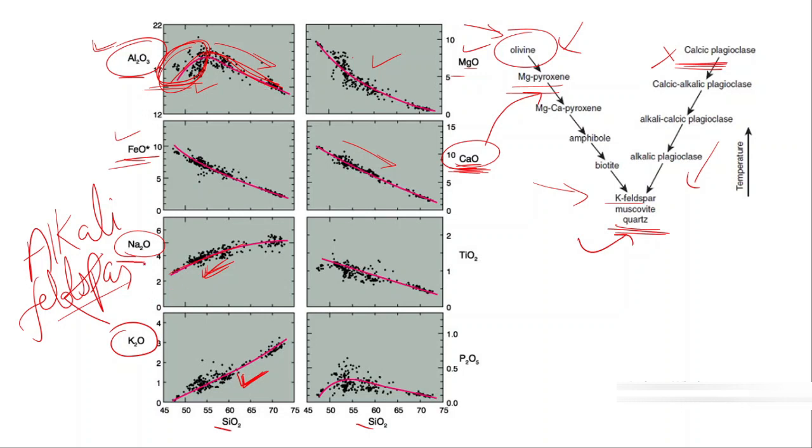As soon as feldspar starts to crystallize along with alkalis, it shows a decreasing trend. This is a very important analysis of this Harker diagram, by which you can see all these important major elements and their trends—how they are crystallizing in any magma.